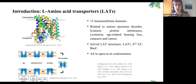In our group, we study L-amino acid transporters, or LATs. They are membrane proteins that are obligatory transporters of amino acids, and they have 12 transmembrane domains which are alpha helices. In humans, they are related to autism spectrum disease, lysinuric protein intolerance, cystinuria, age-related hearing loss, cataracts, and cancer. Some LAT structures have been solved, such as LAT1, B0+AT, and also BASC, which was solved by the people in my lab.